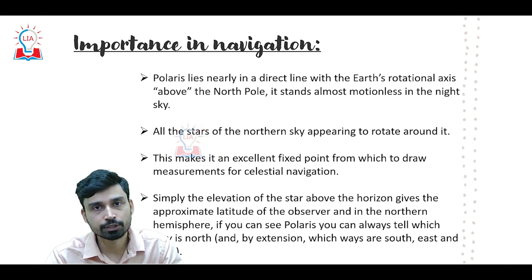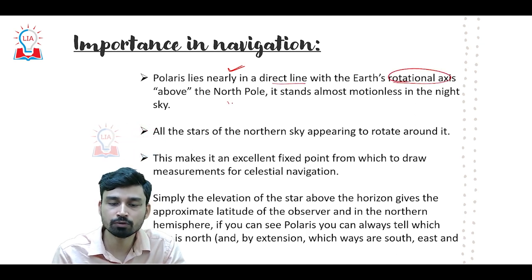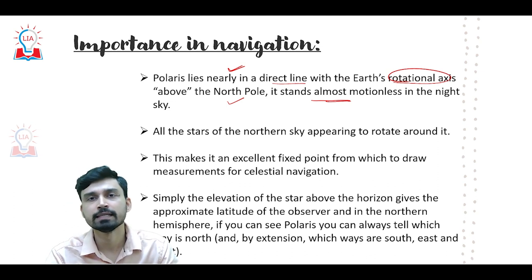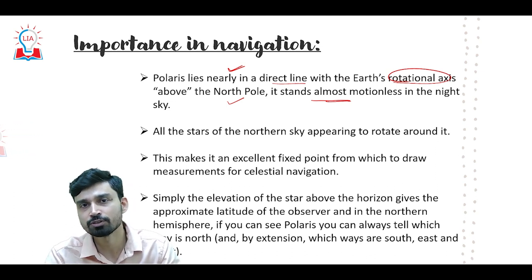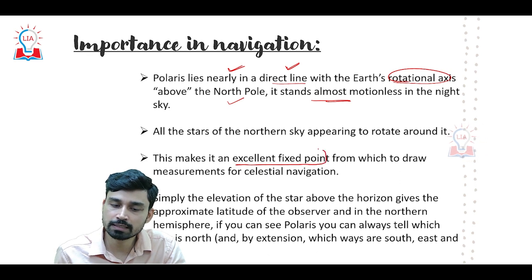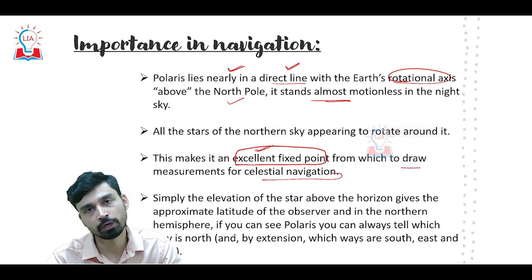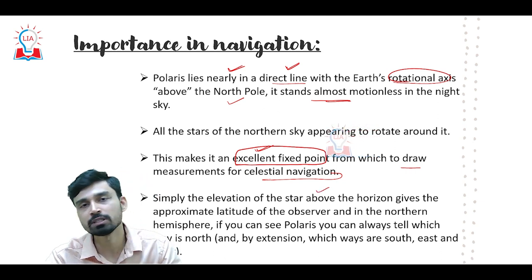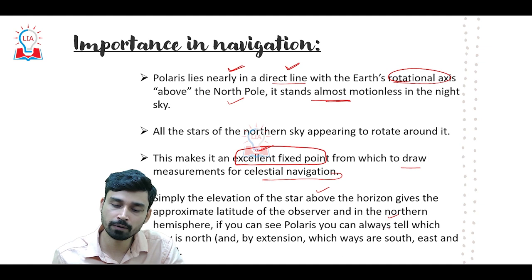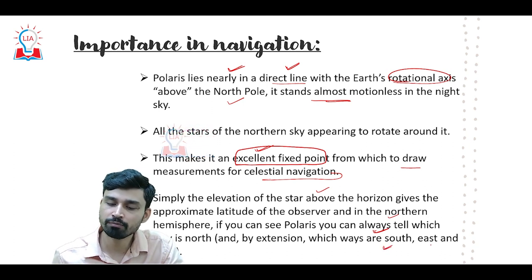The pole star lies in a direct line with the earth's rotational axis above the north pole, and that is why it stands almost motionless in the night sky. The entire sky seems to change as night passes, but the pole star always remains fixed at the same position. This makes it an excellent fixed point for navigators. By looking at this star, they can draw measurements for celestial navigation. The elevation of the star above the horizon gives the approximate latitude in the northern hemisphere.